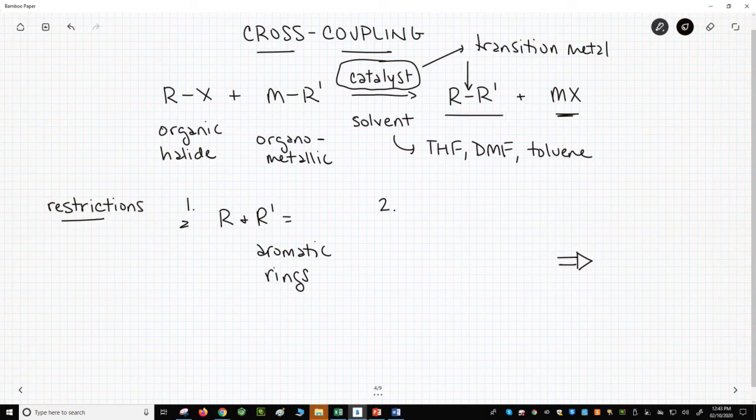So the R-R' product is called a biaryl. One coupling partner will be an aryl halide, like bromobenzene, and the other mostly will be an aryl metal.